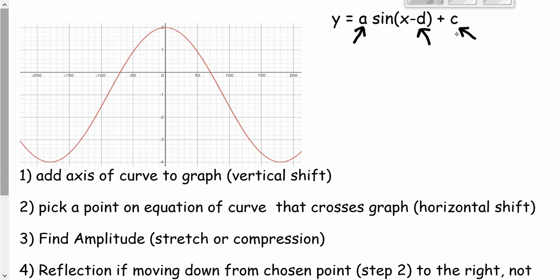The a will also tell us if there's a reflection in the x-axis. So here are the steps. Step one says add axis of curve to the graph, and that's going to be your vertical shift. Vertical means going up and down.